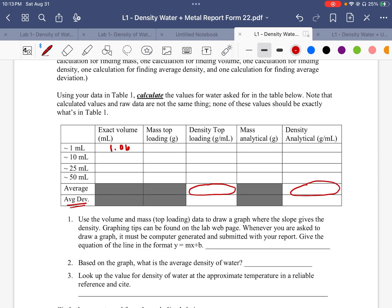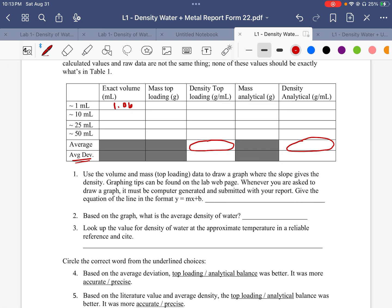So we're going to go back here. It tells us to use the volume and mass data of the top loading to create a graph. You're going to get the y equals mx plus b. Based on the graph, what's the average density? Remember, that's going to be the slope that you determine.